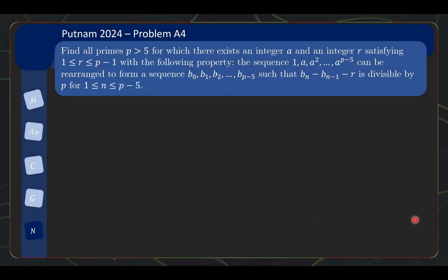The problem statement is as follows: Find all primes p > 5 for which there exists an integer a and an integer r, satisfying 1 ≤ r ≤ p-1 with the following property. The sequence 1, a, a², ..., a^(p-5) can be rearranged to form a sequence b₀ to b_(p-5), such that b_n - b_(n-1) - r is divisible by p for all n between 1 to p-5.